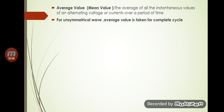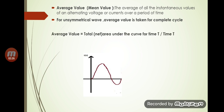For an unsymmetrical wave, the average value is taken for a complete cycle. An unsymmetrical wave is a wave with unequal positive and negative half cycles — the positive half cycle is larger than the negative half cycle. So in such cases, to find out the average value we take the complete cycle.